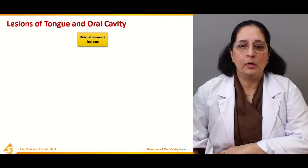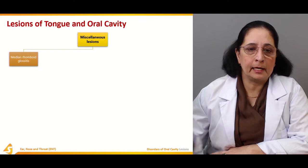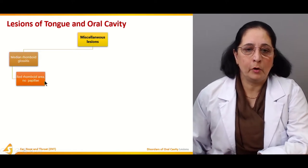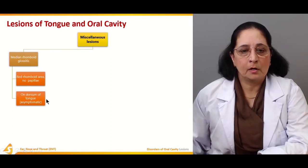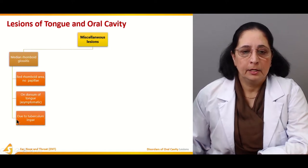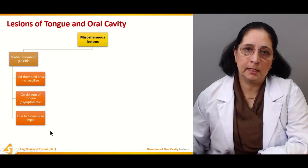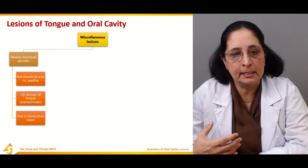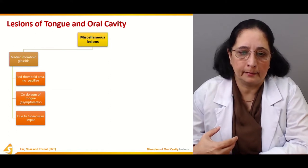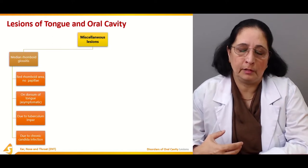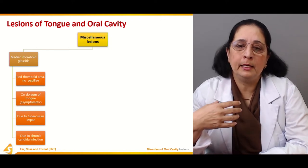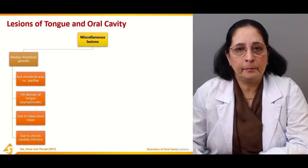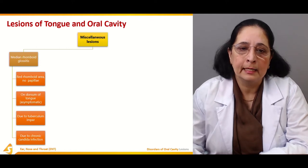Lesions of the tongue and oral cavity. We have miscellaneous lesions like median rhomboid glossitis — a red rhomboid area with no papillae on the dorsum of the tongue, which is asymptomatic and due to the tuberculum impar. It is also caused by chronic candida infection; if it persists for a long time and becomes chronic, it causes median rhomboid glossitis.